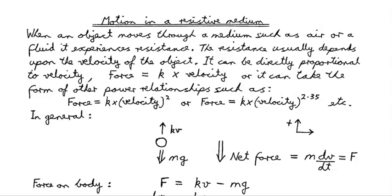The resistance usually depends upon the velocity of the object, and that velocity will change over time. So the resistive force it experiences will change with the velocity. Often it can be directly proportional to the velocity — the force could be some constant k times the velocity — or it could take other power relationships such as k times v squared, or k times v to the power of 2.35.